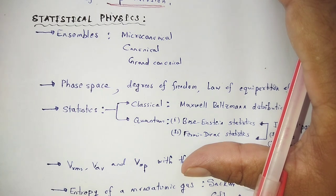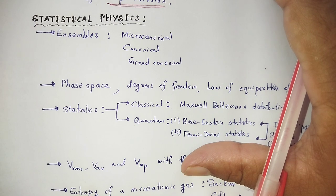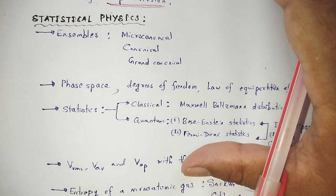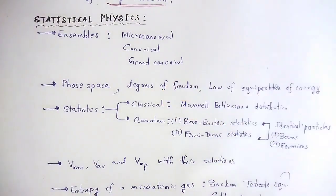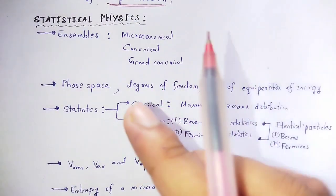For microcanonical ensemble: E, V, N - internal energy, volume, and number of particles are specified for this particular ensemble.